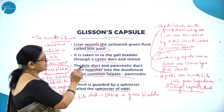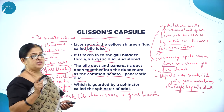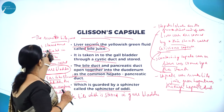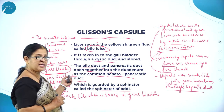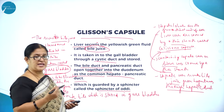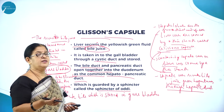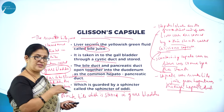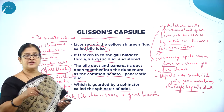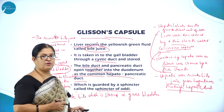Glisson's capsule is a thin sheath that covers the hepatic lobules. Hepatic lobules with hepatic cells are the structural and functional units of the liver which produce bile juice. Bile juice produced from the liver is concentrated in the gallbladder, which is a sac-like structure below the surface of the liver. From the gallbladder through the bile duct, then through the common hepatopancreatic duct, secretions pour into the first part of the small intestine called the duodenum, which is guarded by the sphincter of Oddi.